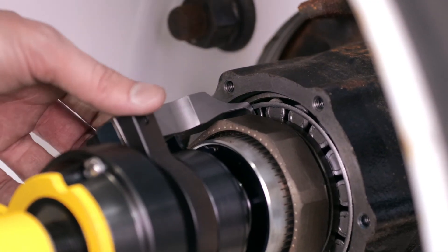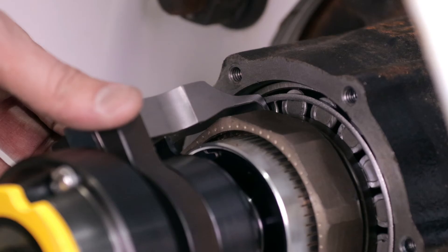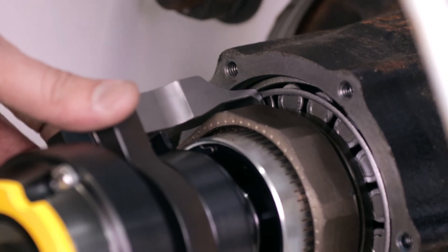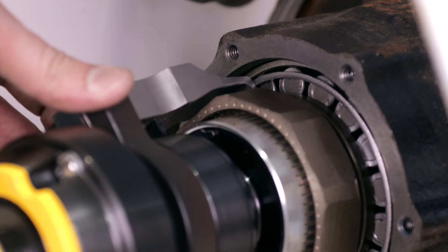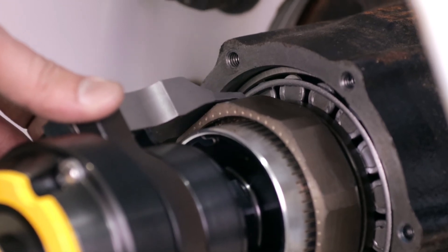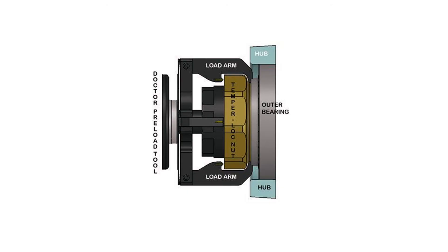The inner surfaces of both load arms should be flat against the sides of the load arm stops. If one or both are out of alignment, slowly push and pull the load arm assembly along the shaft until the tips of the load arms spring into their proper position behind the temper lock nut.